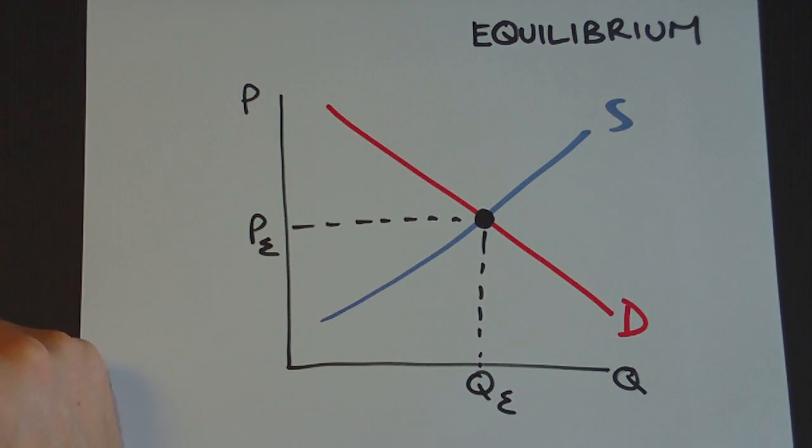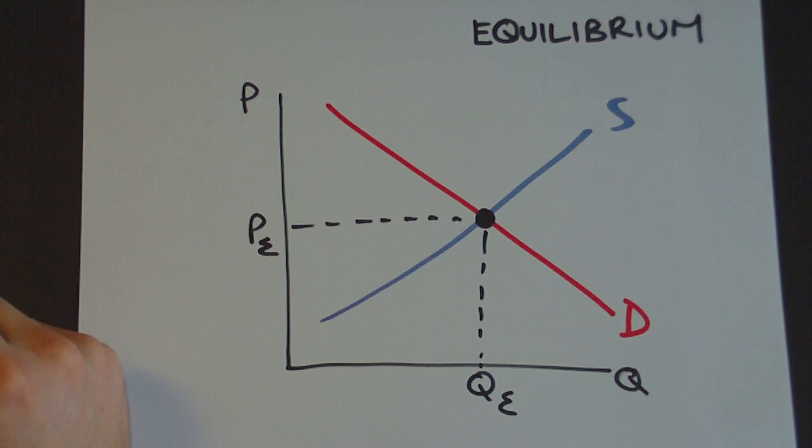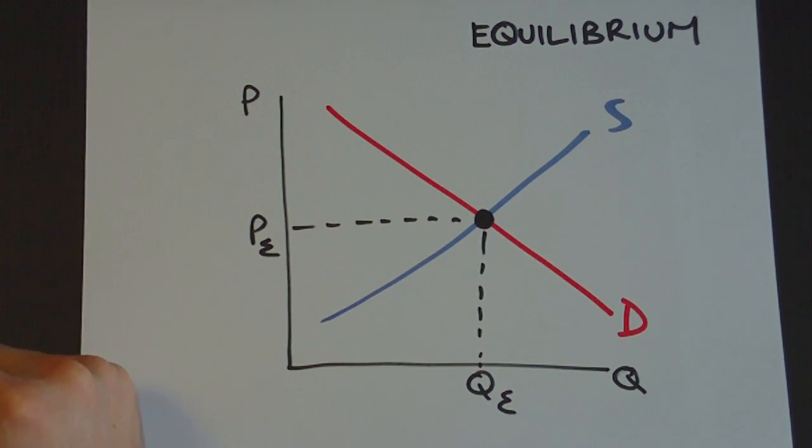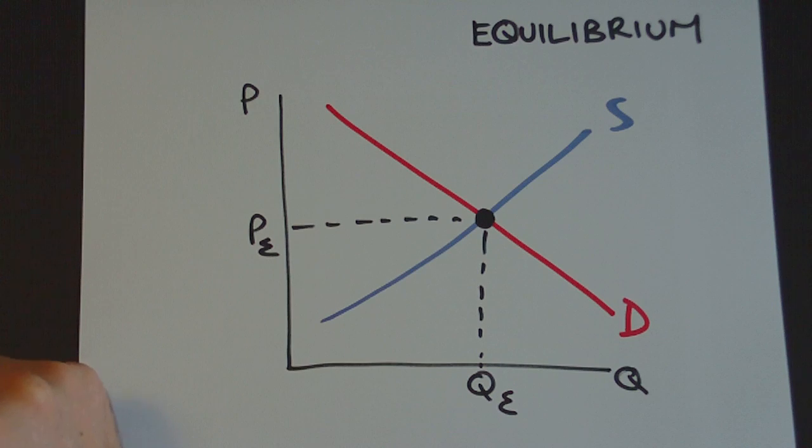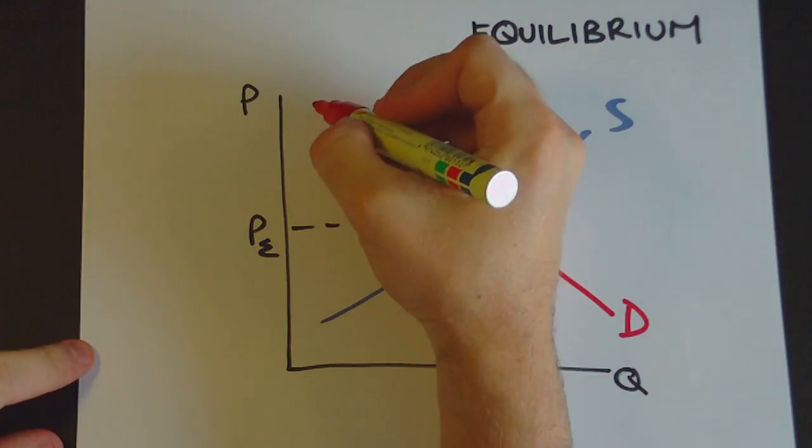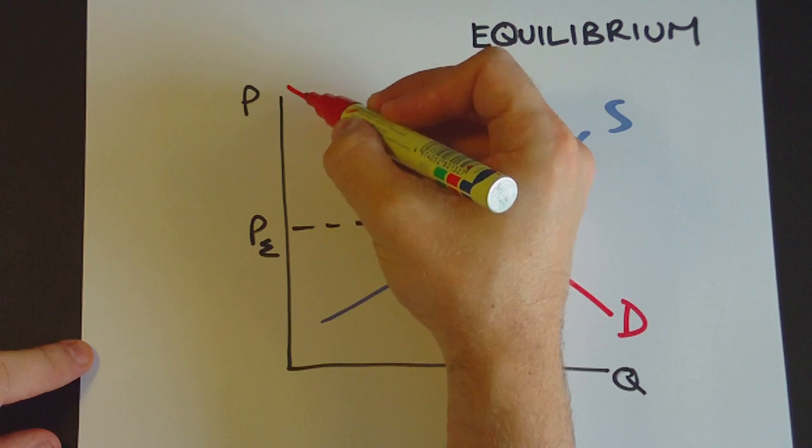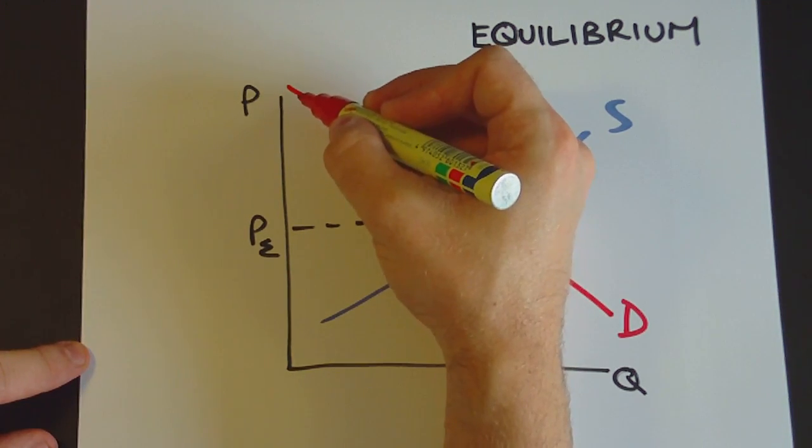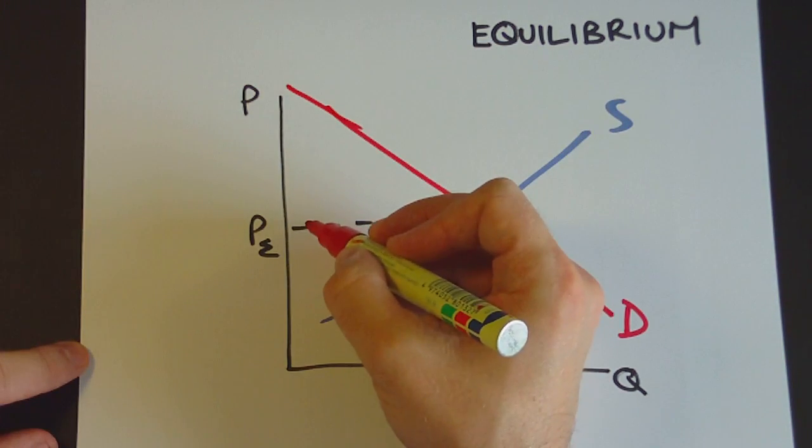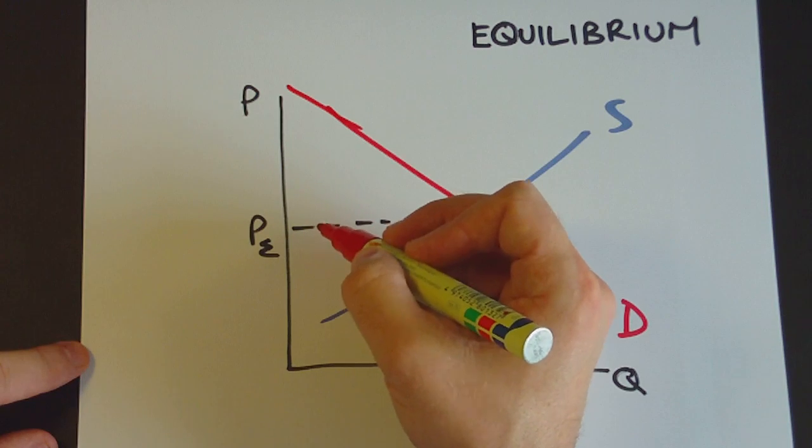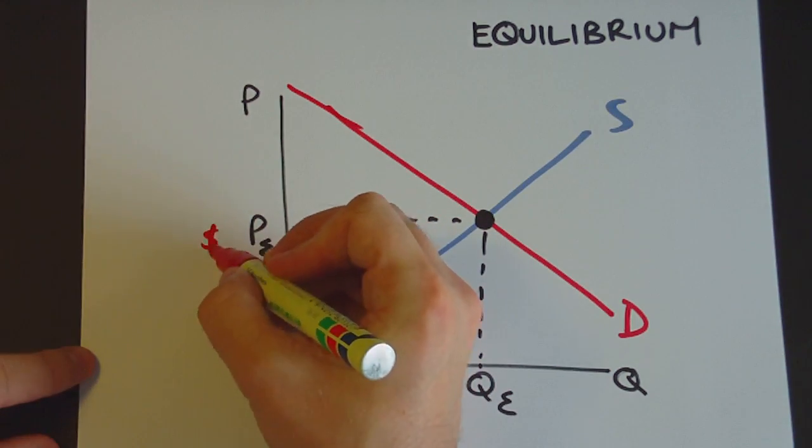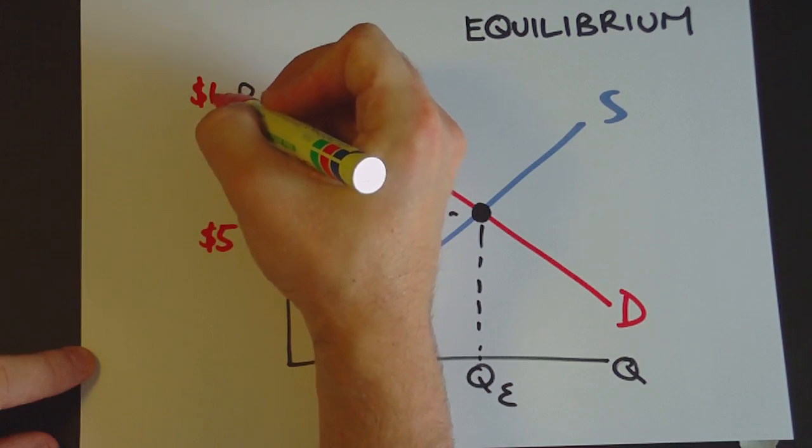Now getting onto the issue of surplus which a lot of people find a bit confusing when they first start thinking about it. The idea of consumer surplus is that there's a consumer here who is willing to pay this high price up here. And let's say it's $10 up here. But the price of the good in the market is way down here. Let's say that one's $5 and $10 up here.